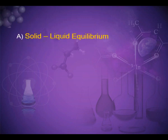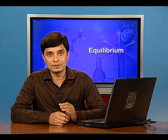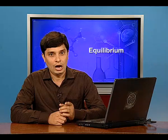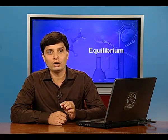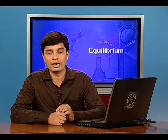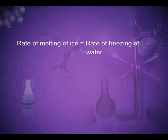The first physical equilibrium is solid-liquid equilibrium. If ice cubes along with water at 0°C (273 K) and normal atmospheric pressure are placed in a thermal flask so that no heat can enter or leave the system, the mass of ice and water is found to remain constant. The two opposing processes at equilibrium are melting of ice and freezing of water, and the rate of melting equals the rate of freezing.